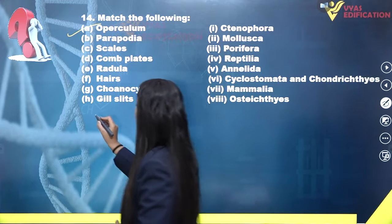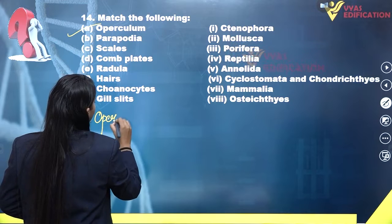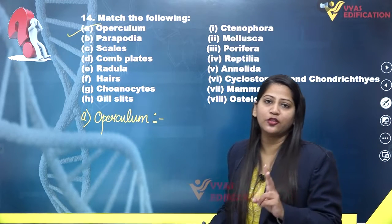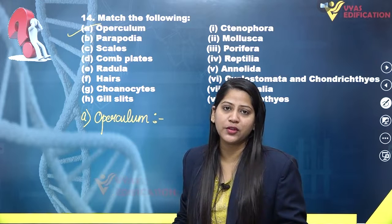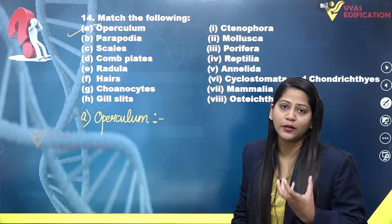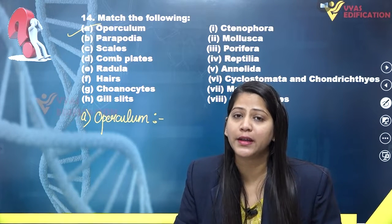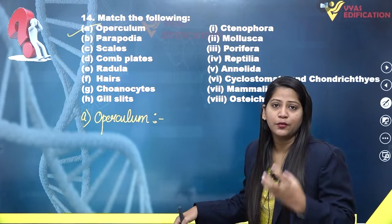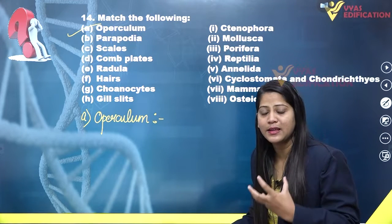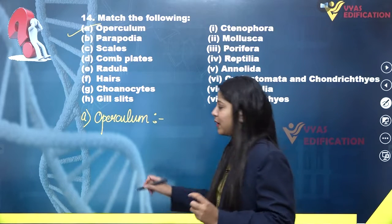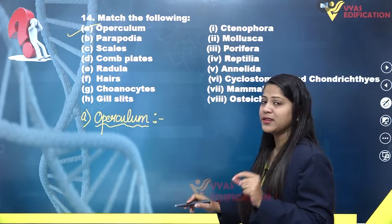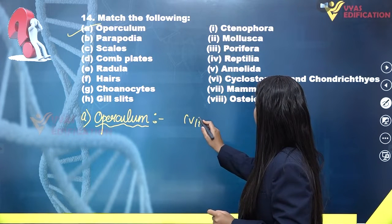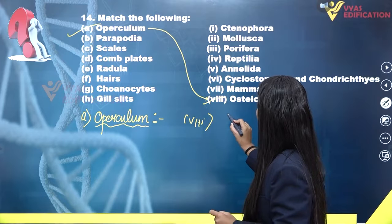The first option is operculum. Operculum is the covering of gill slits present in fishes. We have two classes of fishes: Chondrichthyes, which have an endoskeleton made of cartilage, and Osteichthyes, which have a bony skeleton. In Osteichthyes, the gill slits are covered by a structure known as operculum. So operculum will match with Osteichthyes.